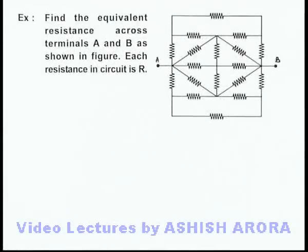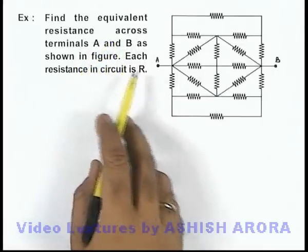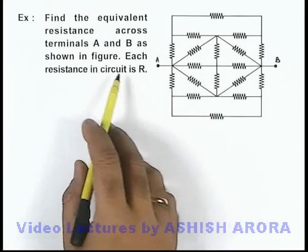In this example, we are required to find the equivalent resistance across terminals A and B as shown in figure. Here also, each resistance in the given circuit is of value R.